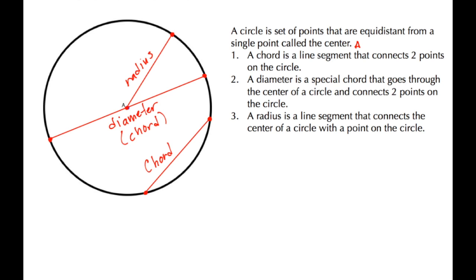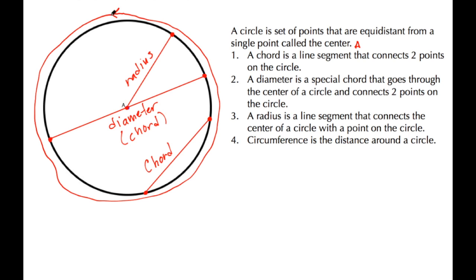The next characteristic I want to talk about is the circumference. Circumference is the distance around the circle. Let's try to draw that in. Notice I'm freehanding so it's not going to be perfect, but as we go around the circle back to where we started, this distance here is called a circumference.